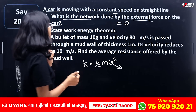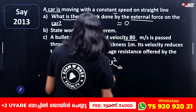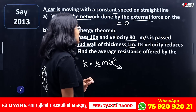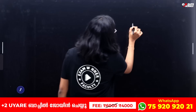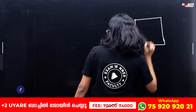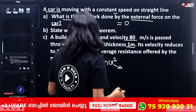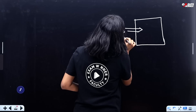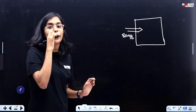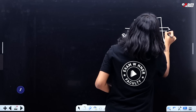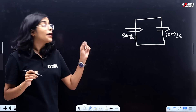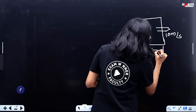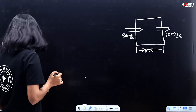Next question: a bullet of mass 10 grams and velocity 80 meters per second is passed through a mud wall of thickness 1 meter. Its velocity reduces to 10 meters per second. Find the average resistance offered by the mud wall. The bullet enters at 80 m/s and exits at 10 m/s, with a displacement of 1 meter through the mud wall.